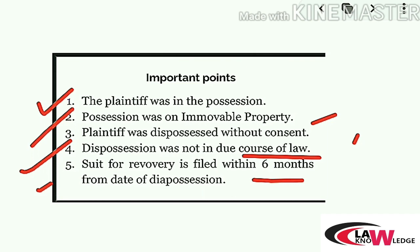To summarize the essentials of Section 6: the plaintiff must have been in possession of the immovable property; the plaintiff must have been dispossessed without consent and unlawfully — without following the procedures of law; and the suit for recovery must be filed within 6 months. If the 6-month period under Section 6 expires, the alternate remedy is to file a suit for recovery under Section 5 of the SRA, but in that case the plaintiff must prove a better title. That could be Section 5 read with Article 64 or Section 5 read with Article 65. Where suit is filed under Section 5, the question of title will definitely be raised — whereas under Section 6, the question of title does not arise.